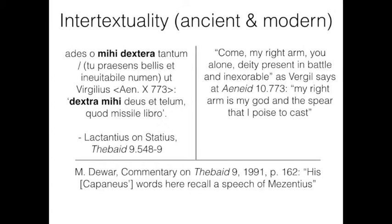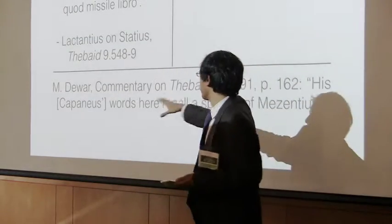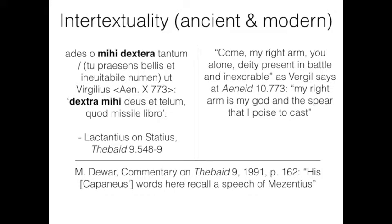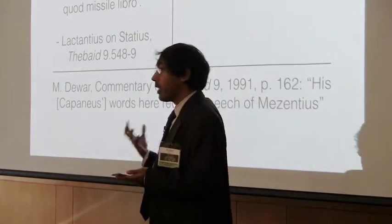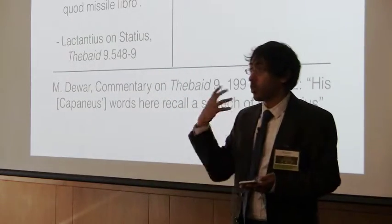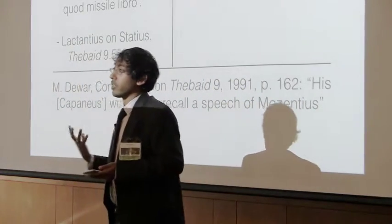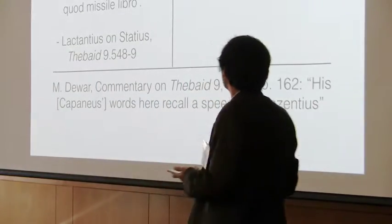Here's the translation. This is obviously an example drawn from the book I wrote a couple of years ago. And then here is a modern equivalent of precisely what Lactantius was getting at. This is a commentary written in 1991. His words here recall a speech of Mezentius, a character in Virgil. So good fodder for the literary critic to work on the ways in which these two characters, these two works might interrelate.